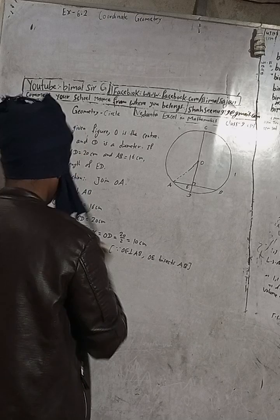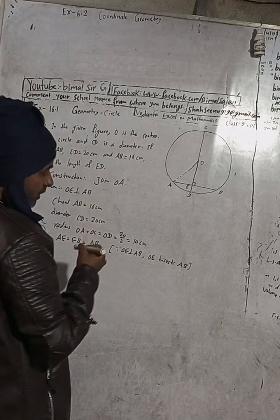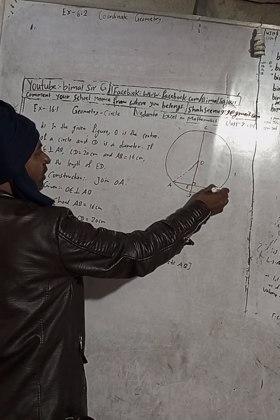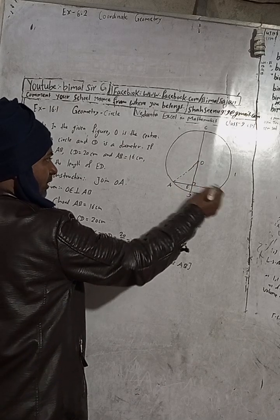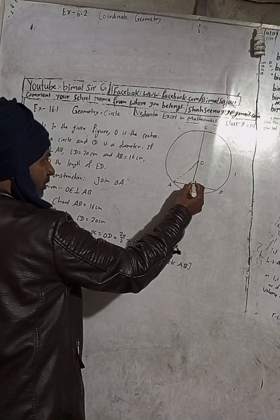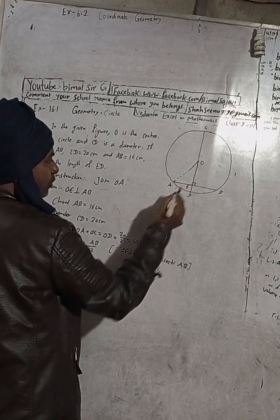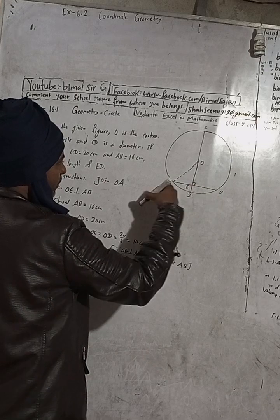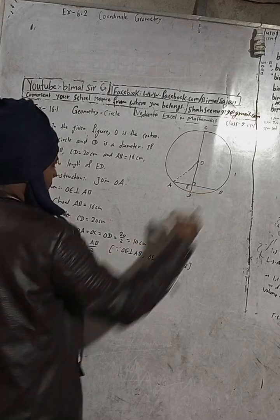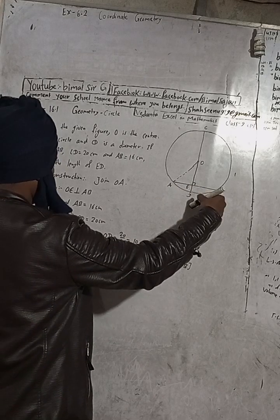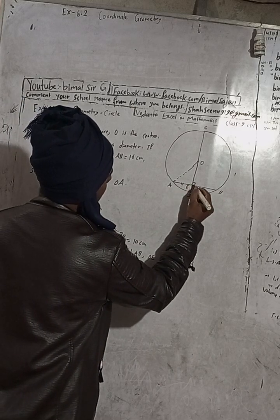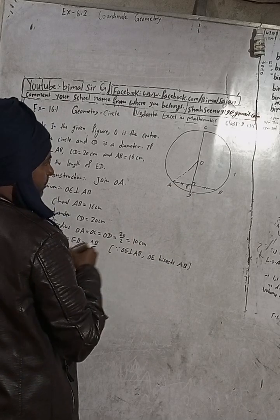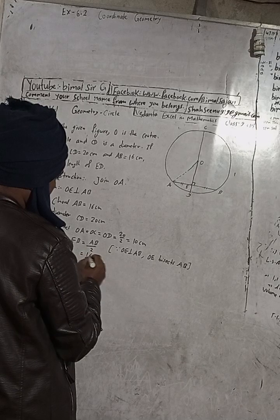OE bisects AB. This is the theorem we have learned: the perpendicular drawn from the center of a circle to the chord bisects the chord. So AE equals AB divided by 2, which is 16 divided by 2, equal to 8 cm.